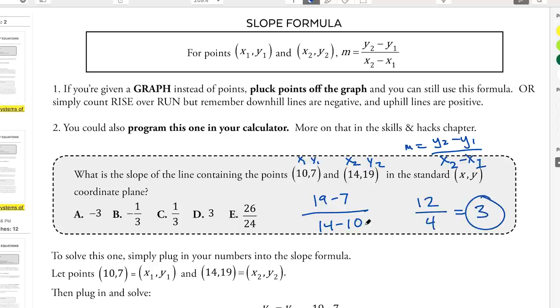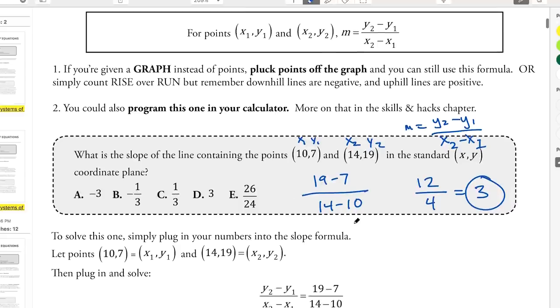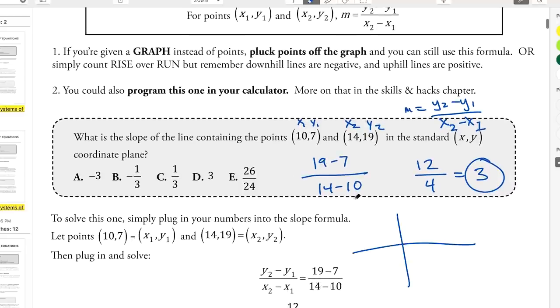Okay, and then if I wanted to totally double-check my work, I could just sketch this out. This is going to be about 10 over and 7 up. So maybe that's like this. This is going to be 14 over and 19 up. So that's going to be something like that. And you can see that this has a positive slope. 3 has a positive slope. Looks good. And the answer is D. Cool. So that's how we do that. It's a basic slope formula kind of thing.